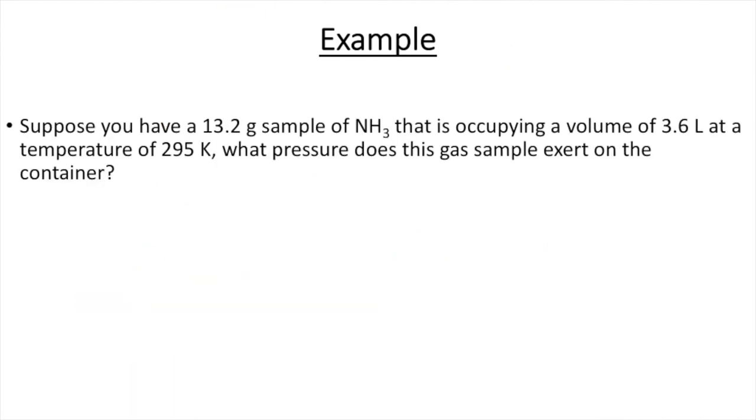Now in this example, I'm given a mass. And then I'm told my volume is 3.6 liters. So there's my volume. My temp is 295K. So there's my T. My pressure is what I'm looking for. So I got my equation PV equals nRT. Pressure is my X. Volume is 3.6.